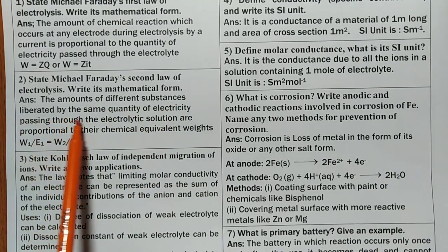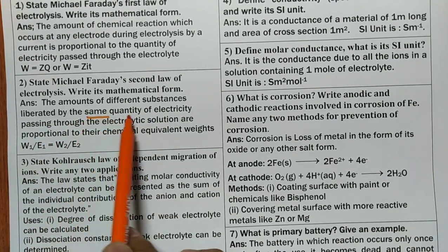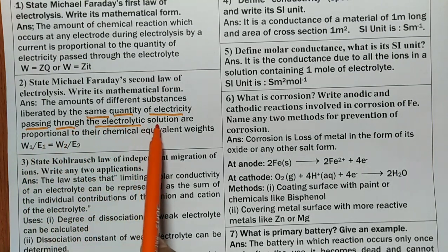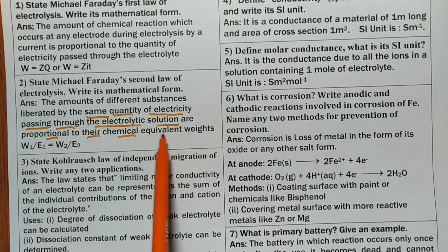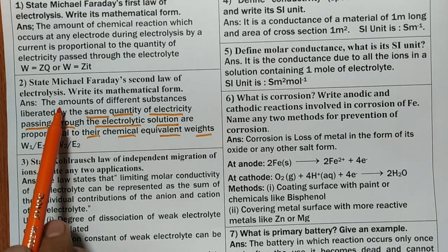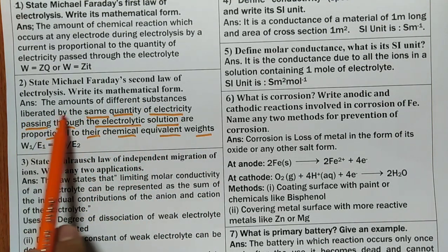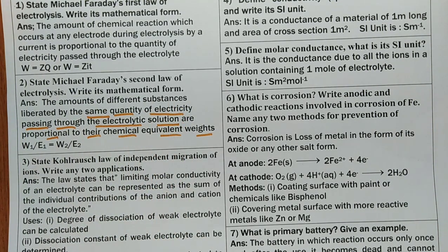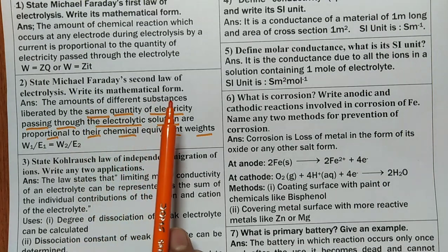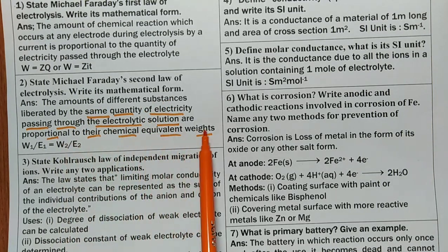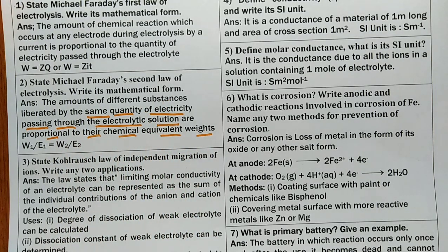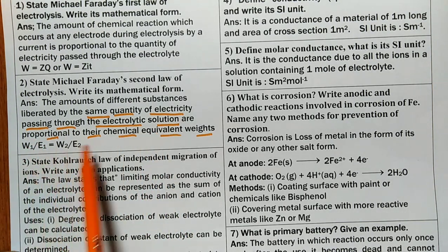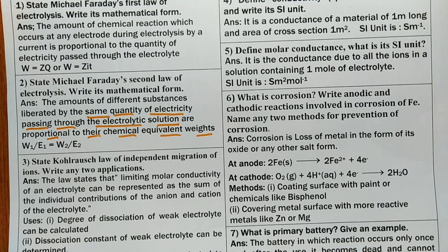Faraday's second law: the amount of different substances liberated by the same quantity of electricity passed through an electrolytic solution is proportional to their equivalent weights. So the amount of different substances liberated is directly proportional to their chemical equivalents. The mathematical form is: W₁/E₁ = W₂/E₂, which can be rearranged to W₁/W₂ = E₁/E₂.